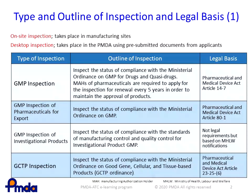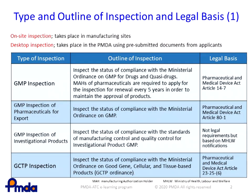For good gene, cellular, and tissue-based products — GCTP in short — GCTP inspection is intended to inspect the status of compliance with the requirements prescribed in the Ministerial Ordinance on GCTP upon application for inspection by applicants. This inspection is conducted in accordance with the Pharmaceutical and Medical Device Act.